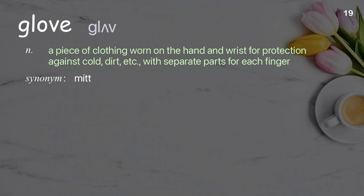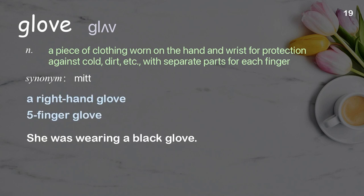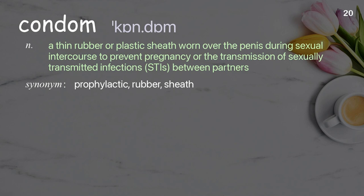Glove: a piece of clothing worn on the hand and wrist for protection against cold, dirt, etc., with separate parts for each finger. Examples: A right-hand glove. Five-finger glove. She was wearing a black glove.